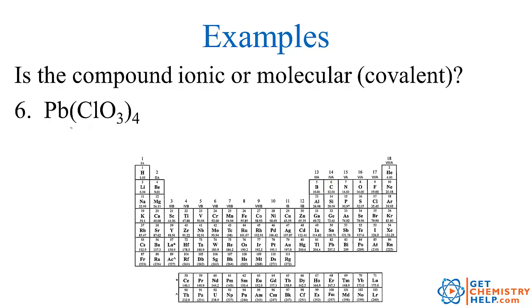And one last one. Lead, chlorine, and oxygen together. So here's lead, here's chlorine, and here's oxygen. Remember, our staircase runs right along here. So lead is on the left side. So lead is a metal, which means it must be an ionic compound.